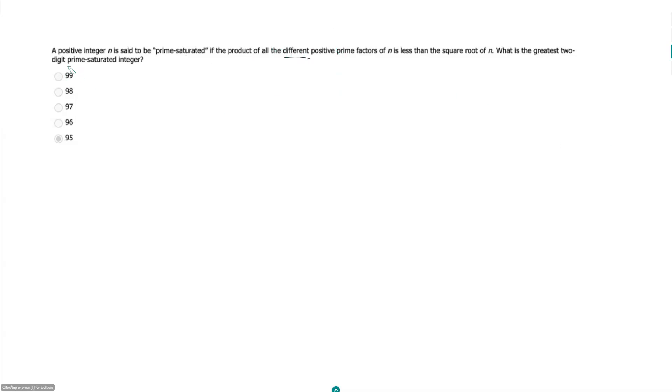And so when they say what is the greatest two-digit prime saturated integer, well you don't actually have to find it because it has to be one of our answer choices. So we can just test the answer choices, and they present them to us very nicely going down in descending order. So if we just start with the biggest one, then the second we get to one that works, that has to be the greatest two-digit prime saturated integer.